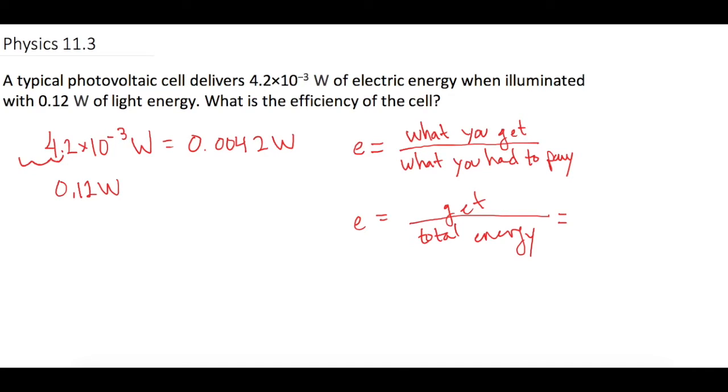Obviously, the total amount of energy that we had to work with was 0.12 watts of light energy, and what we got out of it was 0.0042 watts. It's important that both units be the same on top and bottom, which they are.